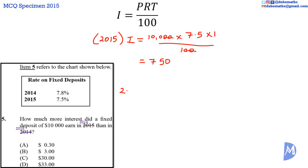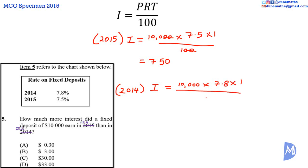Now for the interest earned in 2014: interest is equal to 10,000 multiplied by 7.8 multiplied by 1, over 100. Canceling: 100 multiplied by 7.8 is equal to 780, and 780 multiplied by 1 is 780. The interest earned in 2014 is equal to $780.